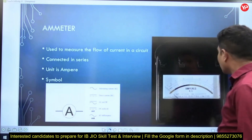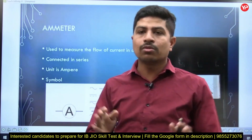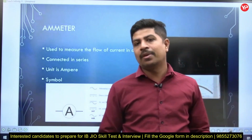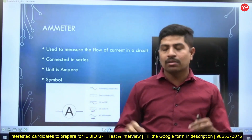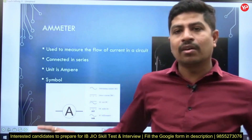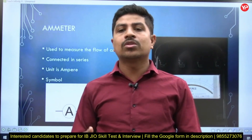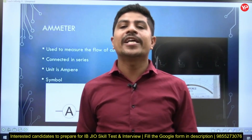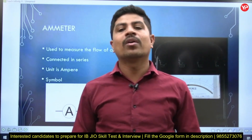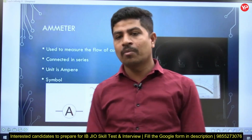There will be around 12 to 20 experiments in the basic electrical engineering laboratory. If you are thorough — if you know about each and everything and are hands-on with all those 20 experiments — then you are done with your preparation for the JIO-IB from an electrical engineering point of view.